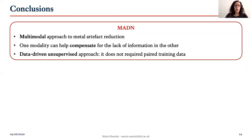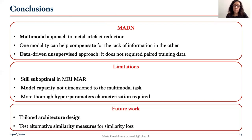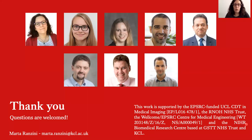Moving to the conclusion, we have presented a multimodal approach to metal artifact reduction using a fully data-driven and unsupervised learning framework, and we demonstrated that the network can learn shared features from the two modalities, which helps reduce the artifact in CT and localize the artifact region in MRI. However, our approach is currently sub-optimal in reconstructing the signal in MRI, which could be due to limited model capacity — for all experiments we preserved the original ADN architecture, which might not be correctly dimensioned to the multimodal task, and a better hyperparameter search should be performed. Future developments will focus on better tailoring the architecture design and testing other similarity losses with the goal of improving the correction in MRI. Thank you for listening, and please feel free to contact me with any questions.